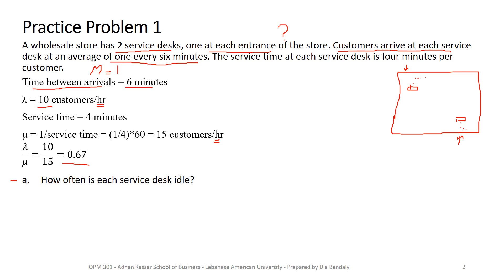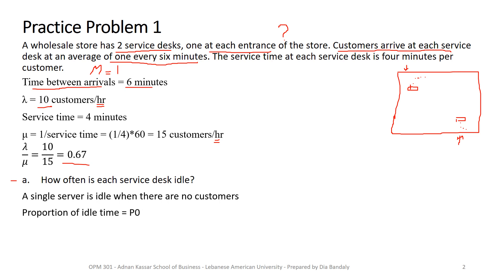How often is each service desk idle? A service desk is idle when there are no customers in the facility, which means we need the probability of zero customers — that's P0. For a single server, the P0 formula is very simple: it's 1 minus lambda over mu. Using our ratio of 0.67, P0 equals 0.33. This is how often every service desk is idle — 33% of the time.